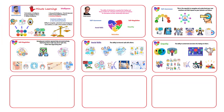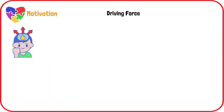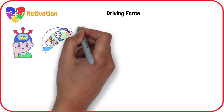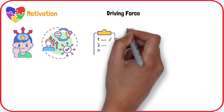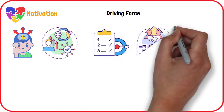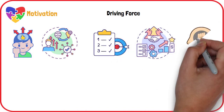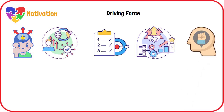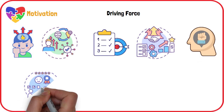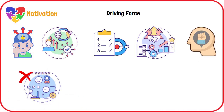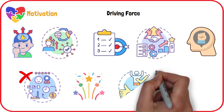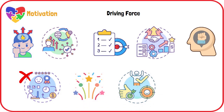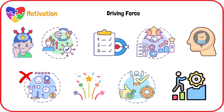Motivation: Emotionally intelligent individuals are driven by intrinsic goals and personal fulfillment rather than external rewards. They set goals, seek continuous improvement, and stay committed to their tasks. To boost motivation: avoid relying heavily on external rewards, celebrate achievements, set small achievable goals, and introduce challenges to stay engaged.